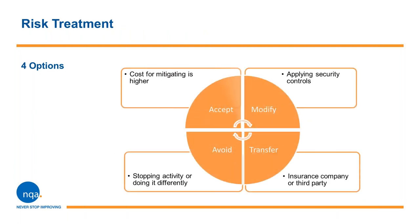Not all risks are created equally — you have to focus on the most important ones, the so-called unacceptable risks. There are four options to mitigate each unacceptable risk: first, modify — apply security controls from Annex A of ISO 27001 to decrease the risk; second, transfer — transfer the risk to another party, for example by buying an insurance policy; third, avoid — stop whichever activity is deemed too risky or do it in a completely different fashion; and fourth, accept — if the cost of mitigating a risk would be higher than the damage caused by risk realization. The challenge is how to decrease risks with minimum investment, as unlimited budgets are never available, but it is possible to achieve the same result with less money — you just need to figure out how.